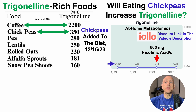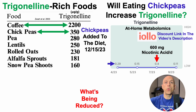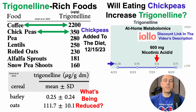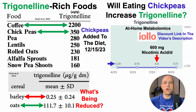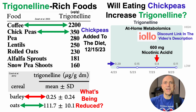Second, if I'm going to include chickpeas in the diet, something has to come out to stay calorie neutral. Two possible options are barley and oats, which are already part of my diet. Barley has very low levels of trigonelline — just 0.25 micrograms per gram — compared with oats in this study, which had about 112 micrograms per gram, roughly 400 times higher. Another study confirmed oats have around 230 micrograms per gram. Still not as high as chickpeas, so I may eliminate oats and barley and completely replace them with chickpeas until the next test.